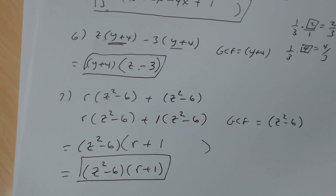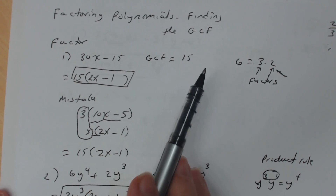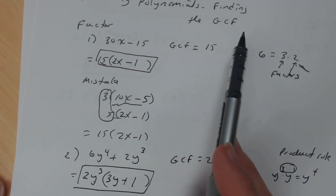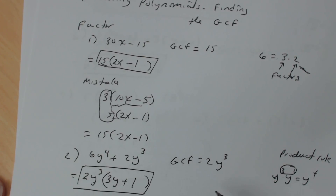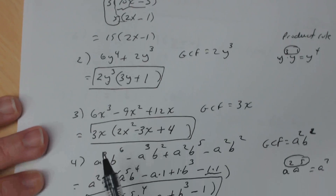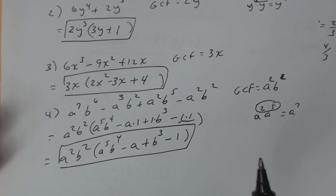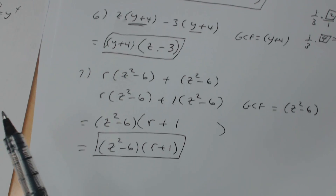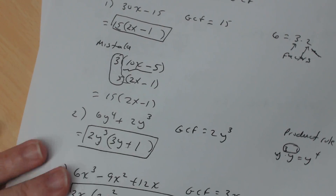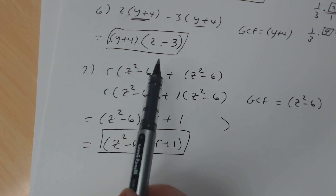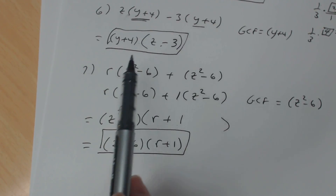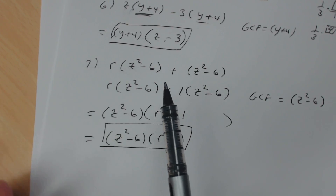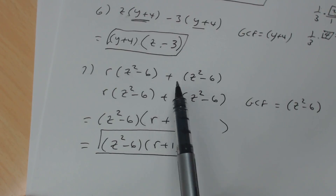That takes care of this lesson on factoring polynomials by factoring out the GCF. Being able to factor out the GCF is going to be important throughout this chapter. The next lesson will involve this same idea again — it will eventually lead to factoring by grouping, where you split a polynomial into groups and find a common binomial factor.